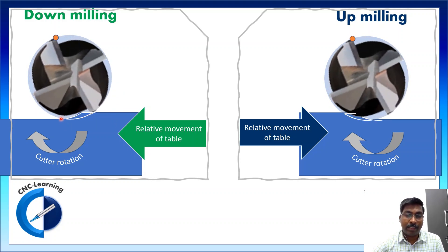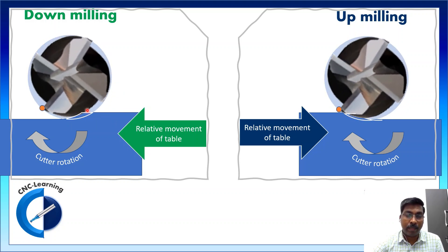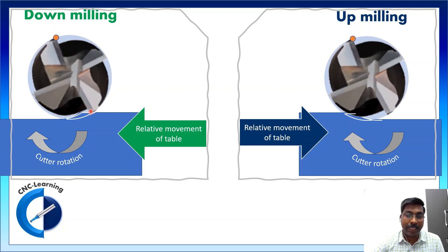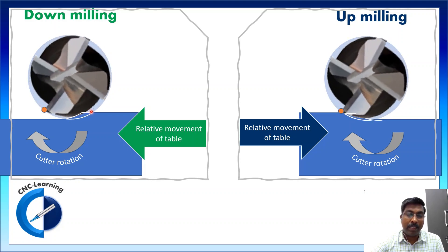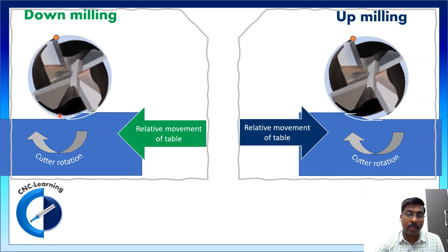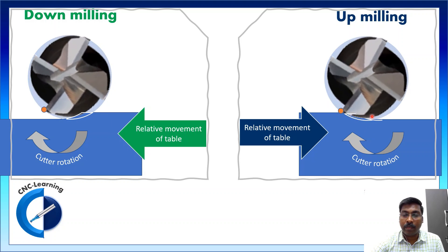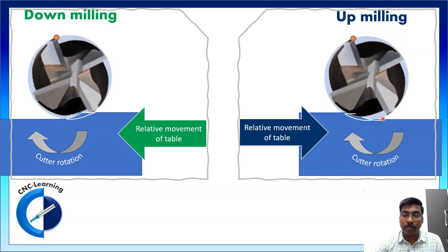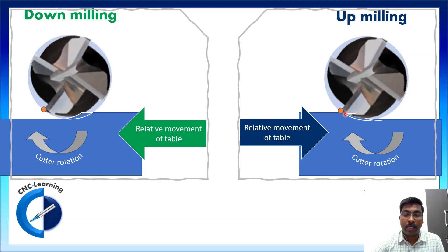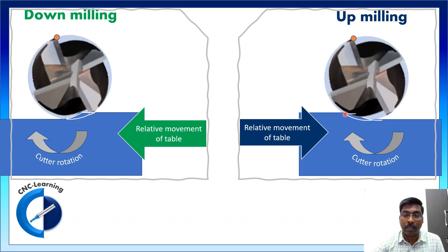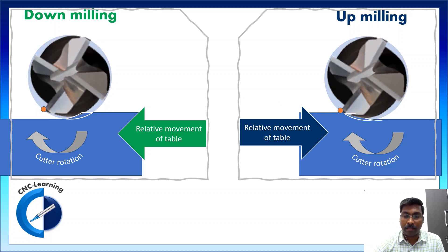Looking at the chip shape: in down milling the chip is thick in the beginning and thinner at the end. In up milling the chip is thin at the start and thicker at the end of the cut.